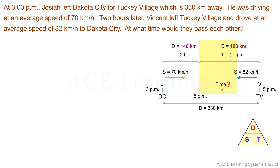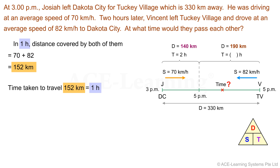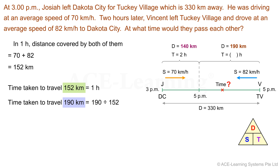From 5 p.m. onwards, Josiah and Vincent traveled at different average speeds toward each other, and together had to cover 190 km. In 1 hour, the combined distance traveled by both is 70 plus 82, which is 152 km. Therefore, time taken to travel 190 km equals 190 divided by 152, which equals 1.25 hours.